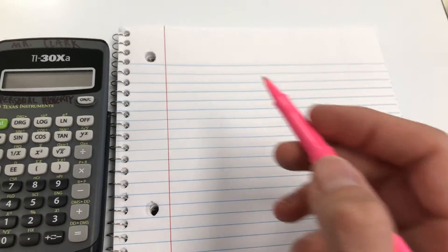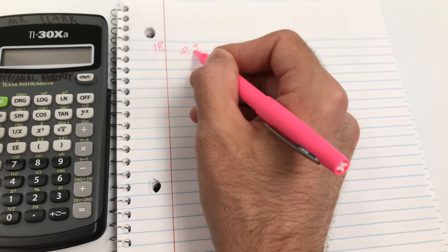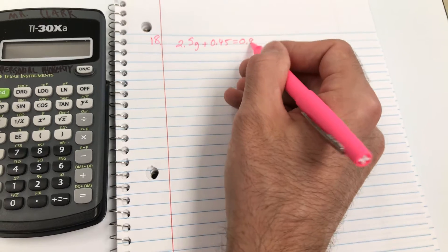All right, number 18. 2.5g plus 0.45 equals 0.95.